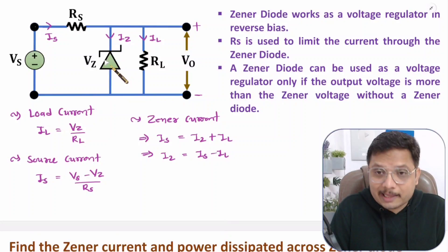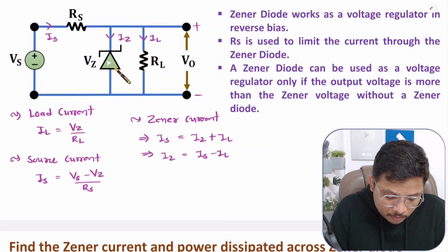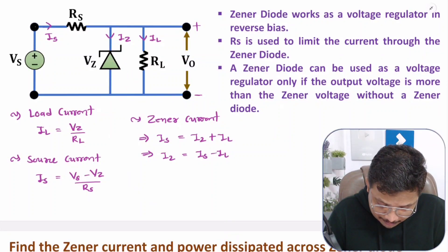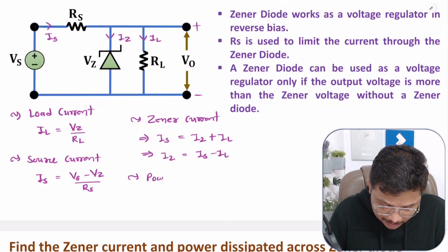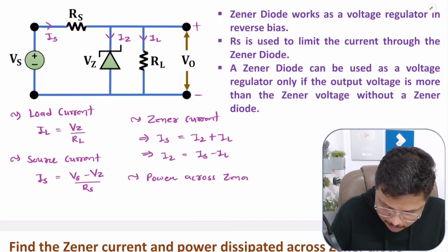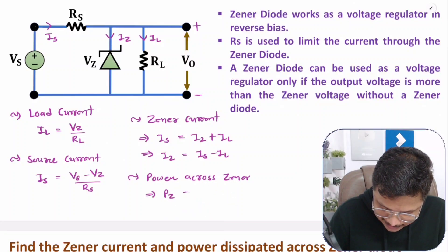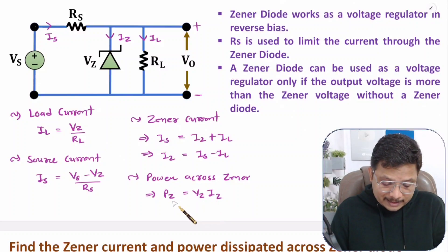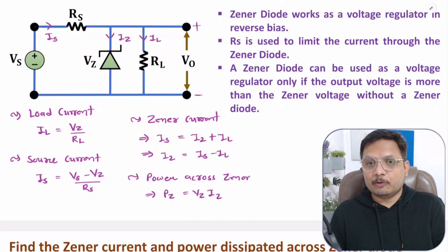If you want to calculate how much power is dissipated across the Zener diode, that power equals voltage times current. Power across Zener, Pz, equals Vz times Iz. Those are the different parameters one can calculate.